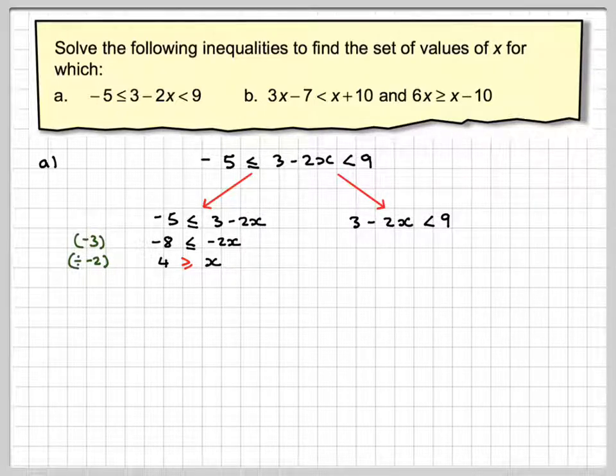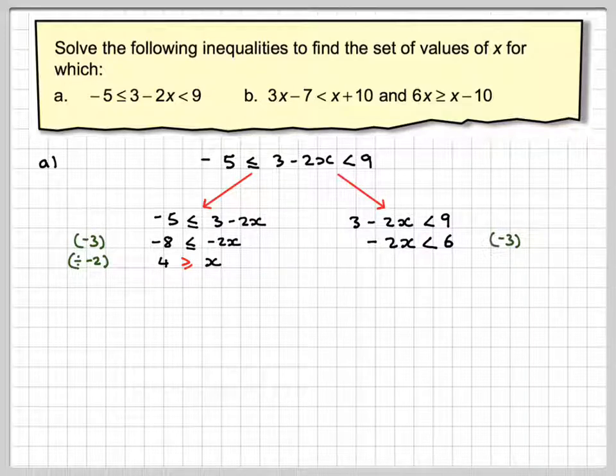Then solve the other one, which is 3 minus 2x is less than 9. Doing exactly the same thing, take away 3, you get minus 2x is less than 6. Dividing by negative 2, you have to reverse the inequality, so x will be greater than minus 3.